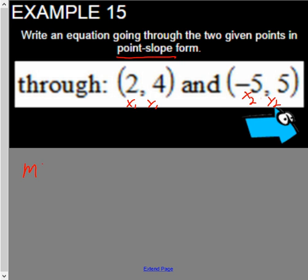To find slope, we're going to do y2, 5, minus y1, which is 4, over x2, negative 5, minus x1, which is 2.